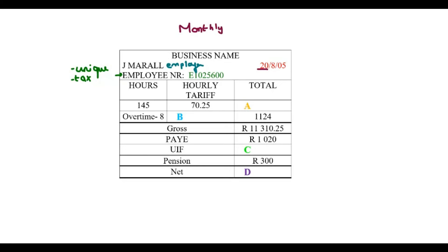Now if we move on, we see that he worked 145 hours. And his hourly tariff was 70 rand. His rate was 70 rand, 25 cents per hour. Now if I want to find the total, I would have to say the hours times the hourly tariff. And you can remember that, that's kind of a little formula.